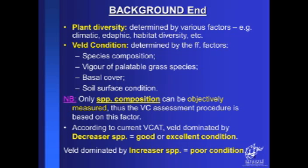According to the current veld condition framework, a veld dominated by decreaser species is regarded as in good or excellent condition, depending on the level of abundance of decreaser species present in the vegetation. On the other hand, a veld dominated by increaser species is regarded as in poor condition.